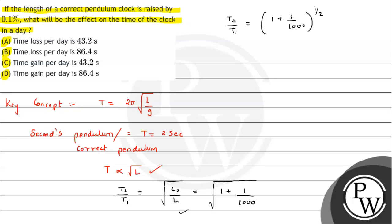By binomial expansion, this becomes (1 + 1/2000). So from here we can write T2 as T1(1 + 1/2000).